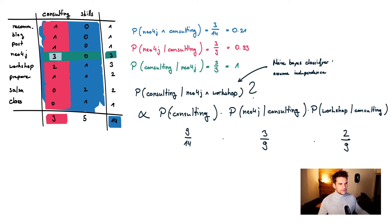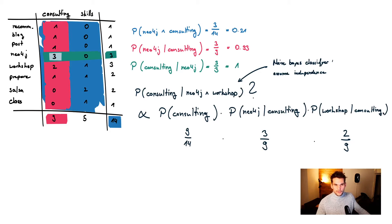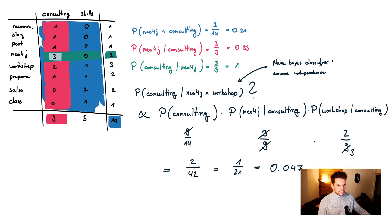If we plug in the numbers: P(consulting) is 9 over 14 because 9 out of 14 assignments are in consulting. Times the probability for seeing 'Neo4j' given consulting, which is 3 over 9. Times the probability for seeing 'workshop' given consulting, which is 2 over 9 because workshop has two assignments in consulting. That leads us to a final score of 0.047 — and that's exactly how we implemented this Naive Bayesian classifier in Neo4j and Cypher.